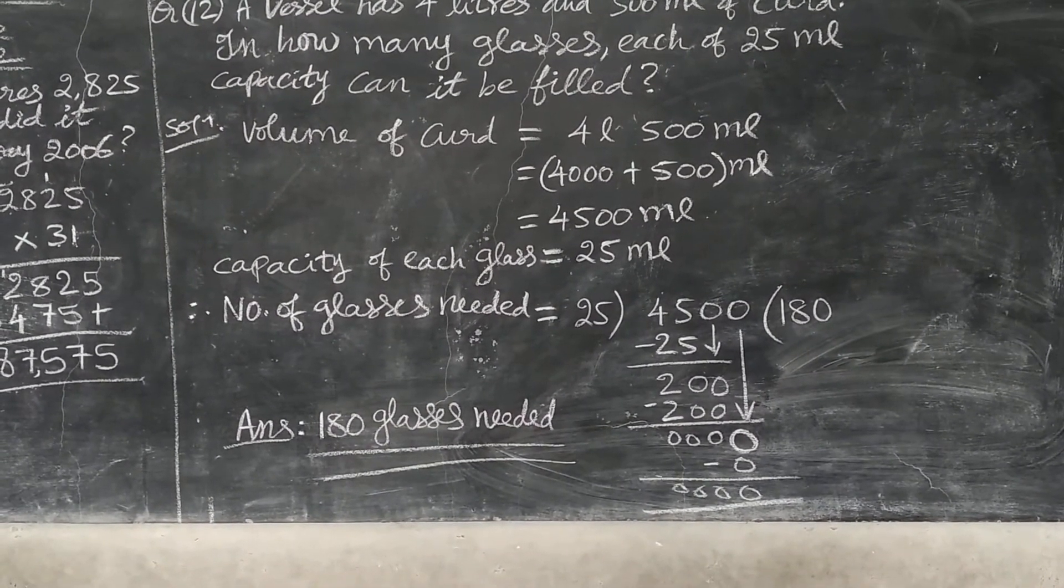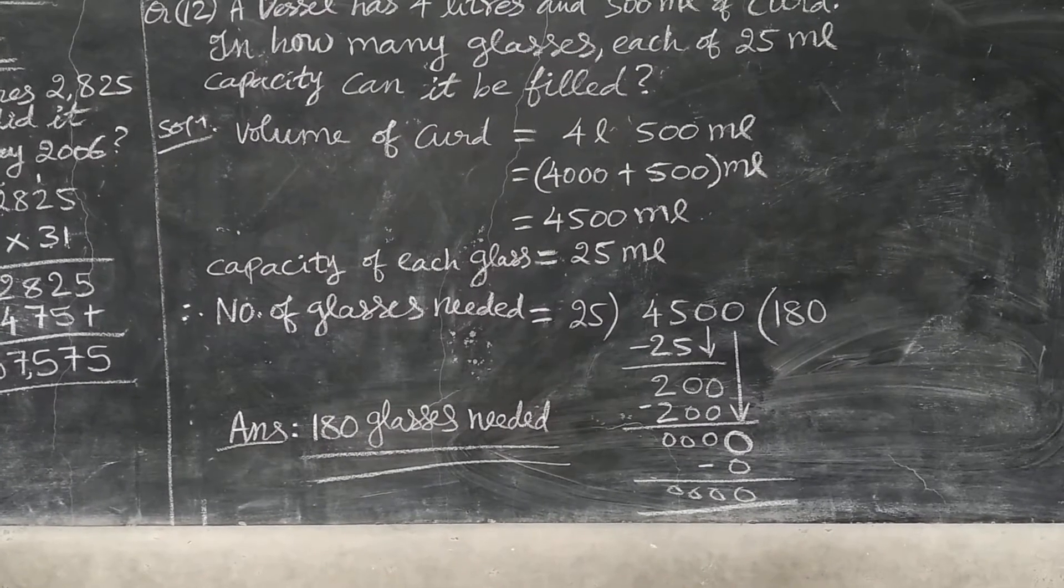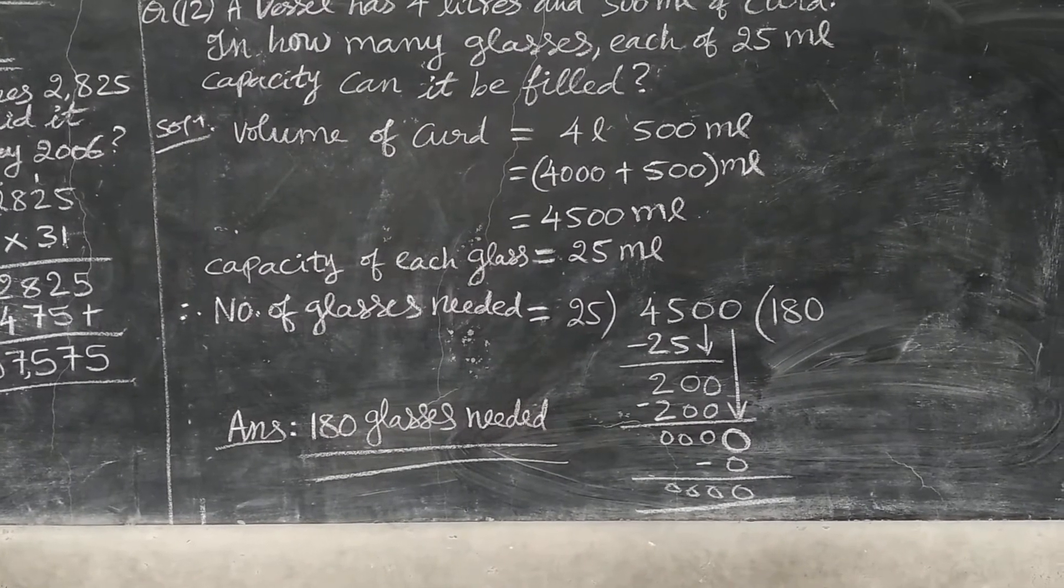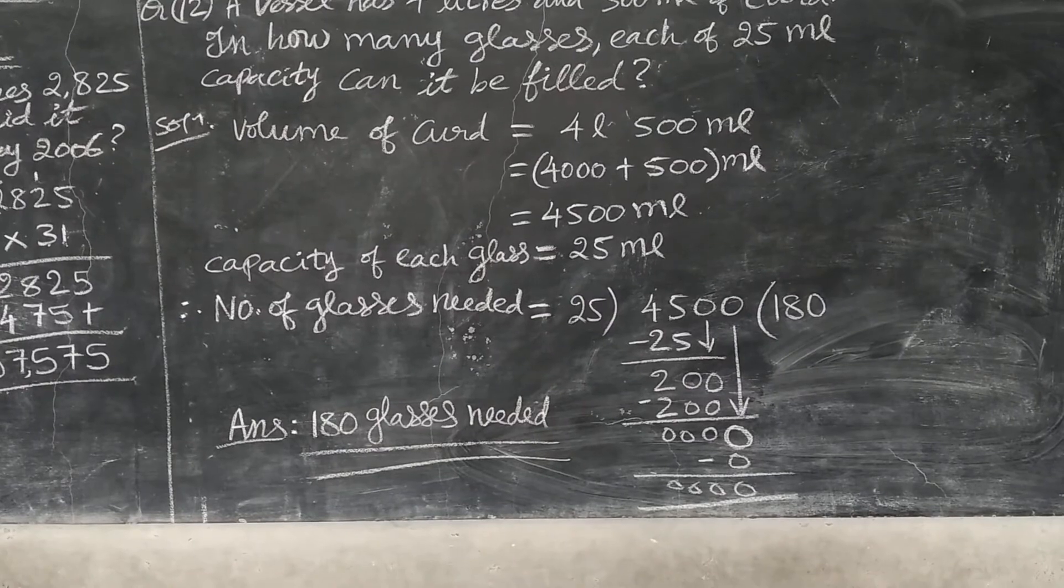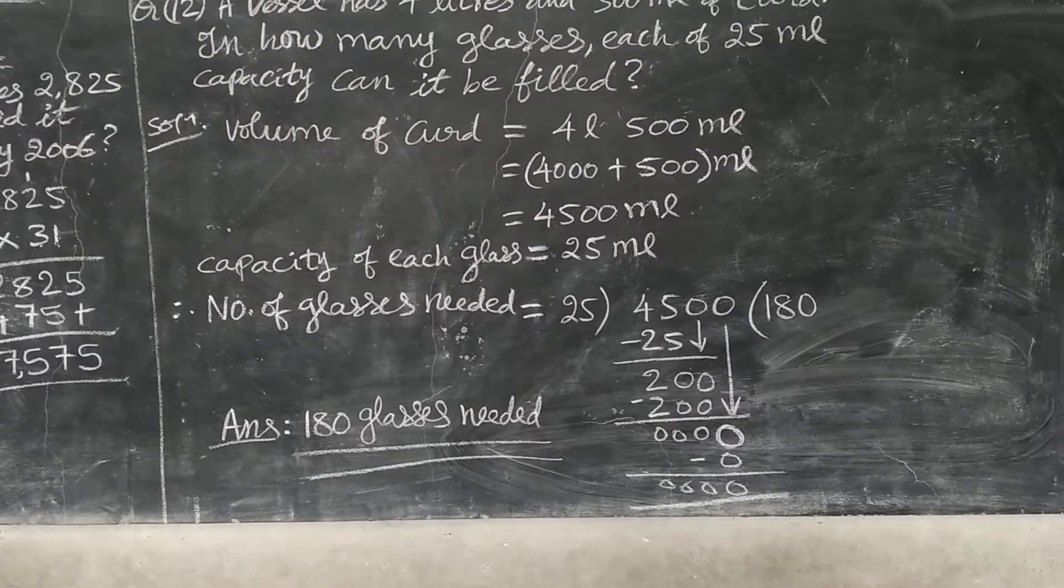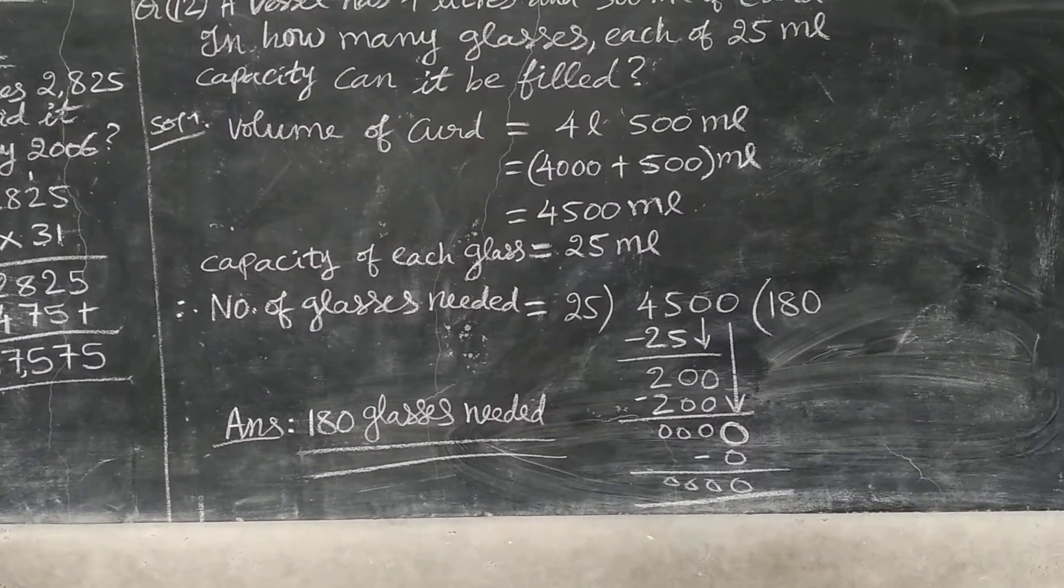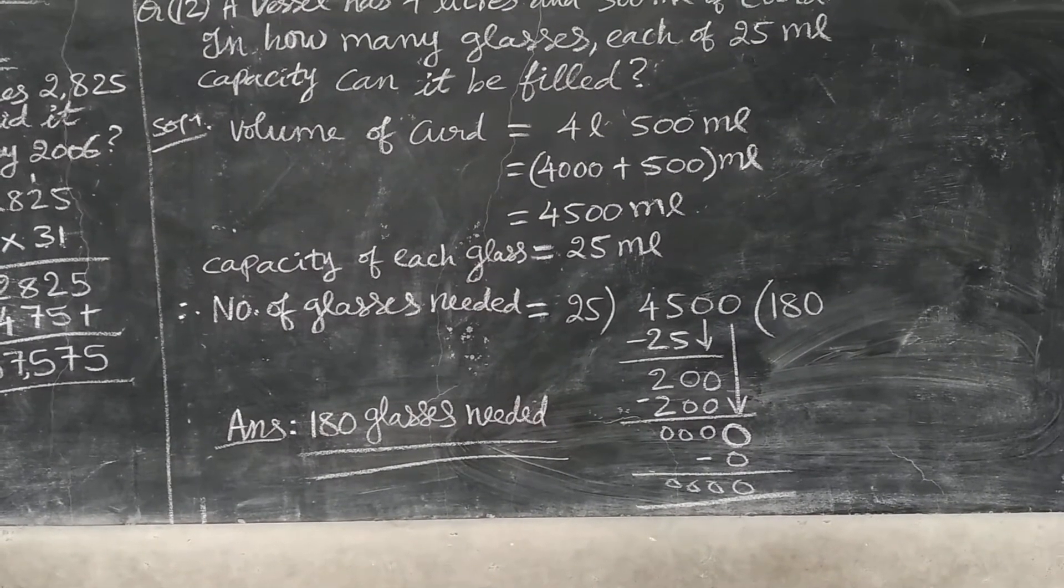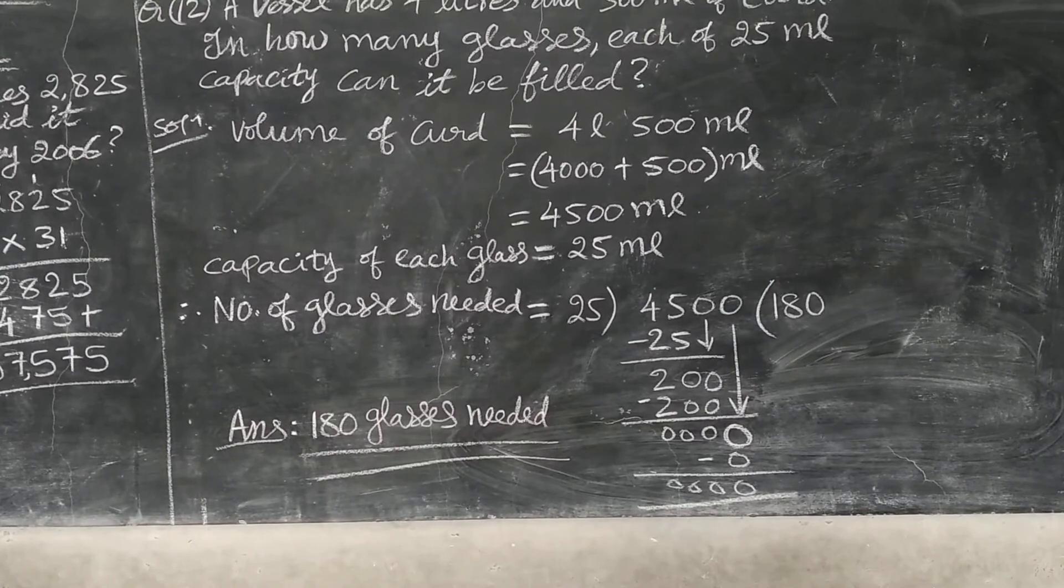Divide by 25. 25 ones are 25, 45 minus 25 you will get 20. Bring down 0, which is there in the tens place. By arrow mark I have shown, see. Bring down that 0. 20 becomes 200. 25 eights are 200.